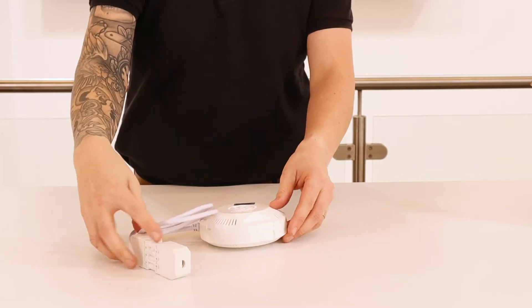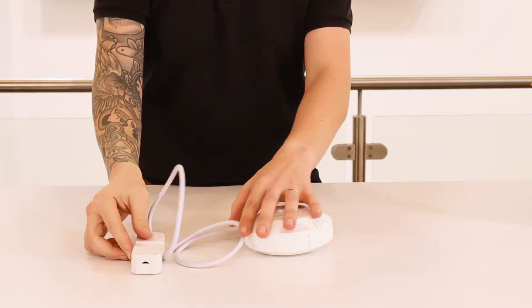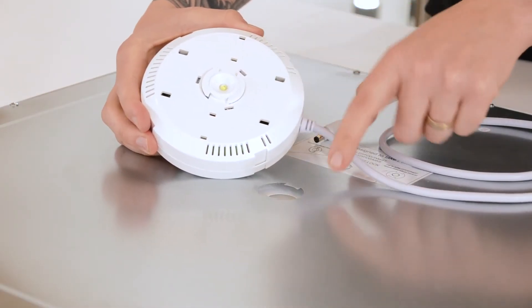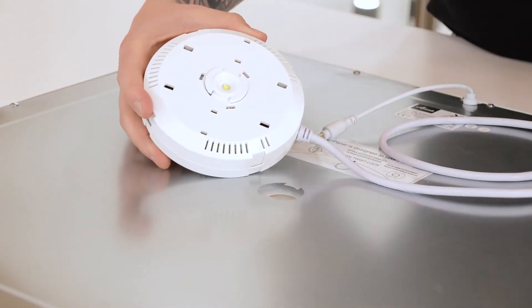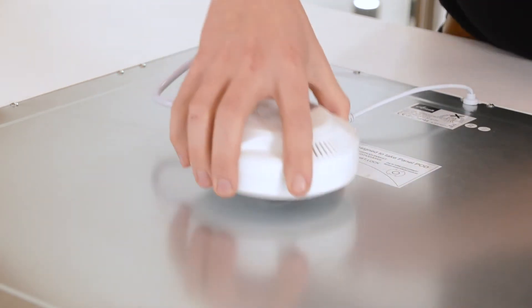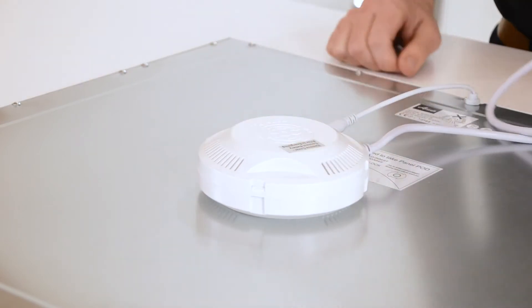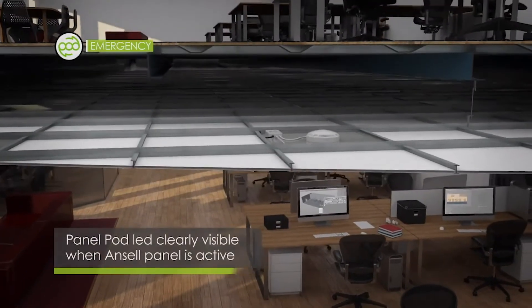The PanelPod is compatible with Ansel's Pace, Infinite, and Endurance panels, enabling them to be converted into emergency self-test or sensor fixtures. The simple twist lock connection to the back of the panel can be installed quickly and easily. The solution eliminates the requirement for additional stock SKUs for dedicated emergency and motion sensor versions for that specific panel.